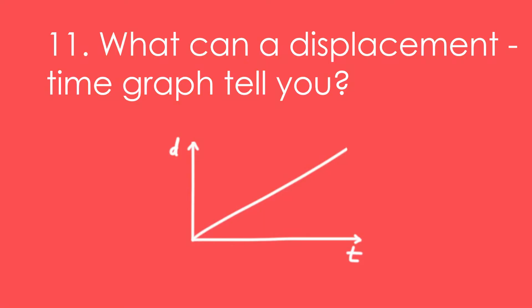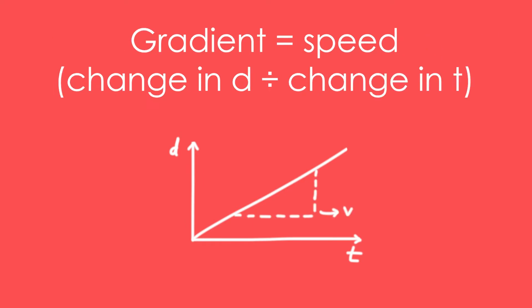11. What can a displacement time graph or distance time graph tell you? The gradient is equal to velocity, or speed of its distance time. That's change in distance divided by change in time.